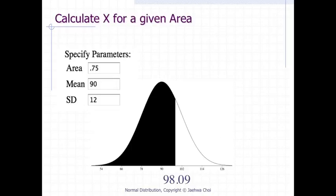The calculator calculate x for a given area works in reverse. For example, say you wanted to find the score corresponding to the 75th percentile of a normal distribution with a mean of 90 and a standard deviation of 12. You enter 90 for the mean and 12 for the standard deviation. Then enter 0.75 for the shaded area and click the below button.